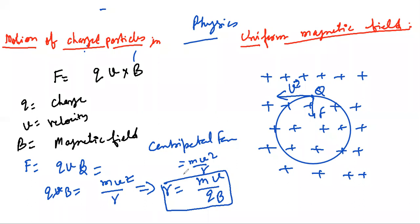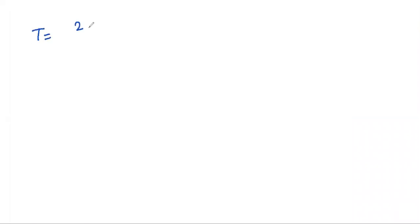Now, the next part we have to understand is the time period T. The formula of time period is circumference divided by velocity.